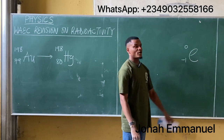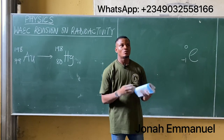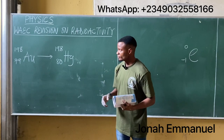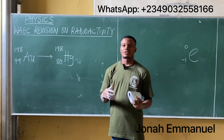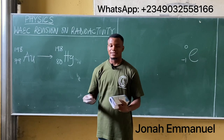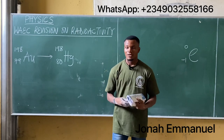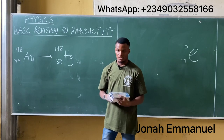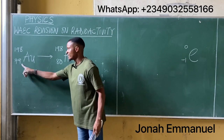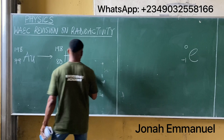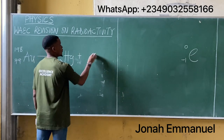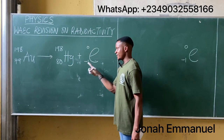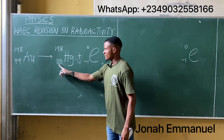When a nucleus or atom of an element emits beta particles, the atomic number is increased by one. Looking at this, the atomic number goes from 79 to 80 — so it has to be plus one. Let's say this is one beta particle. If I combine this, the mass number becomes 198 plus 0, which equals 198.